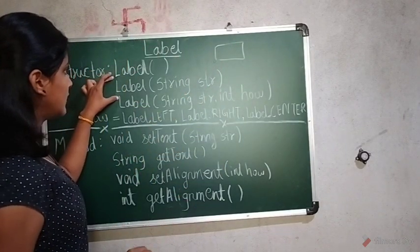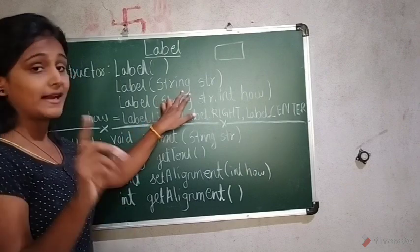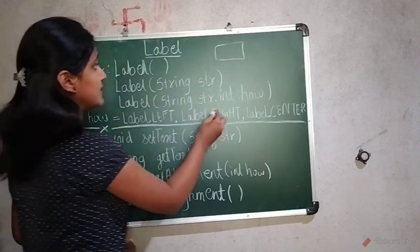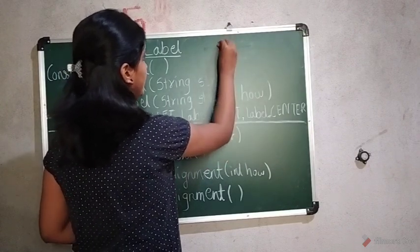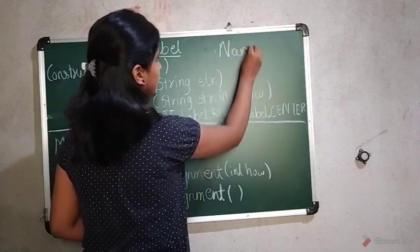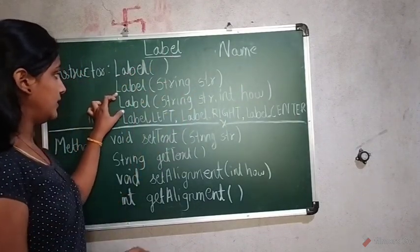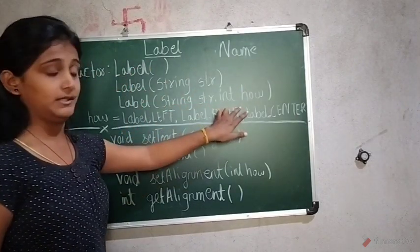Now the next one, the parameter is one but it is passed as a string. Suppose here I pass the string, suppose the name, then it will be your label having the string name. Now the third one contains two parameters.